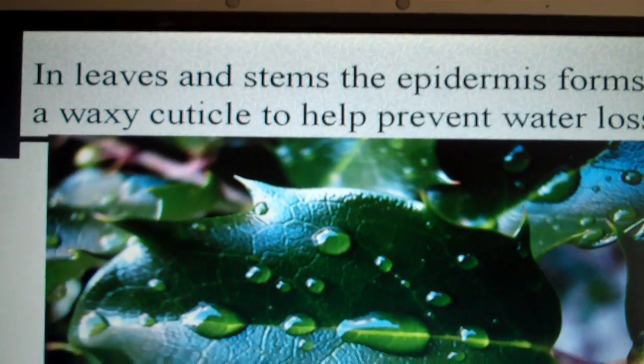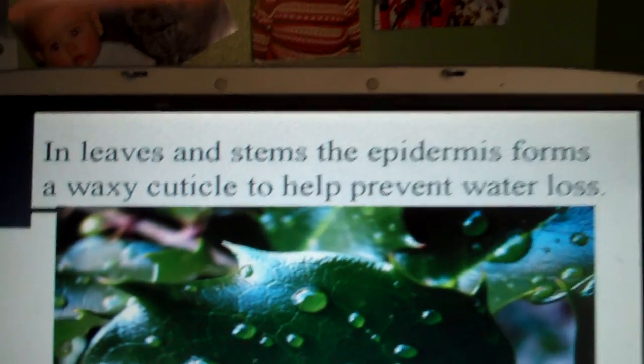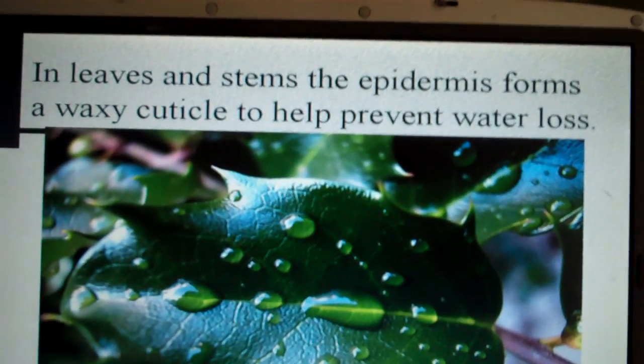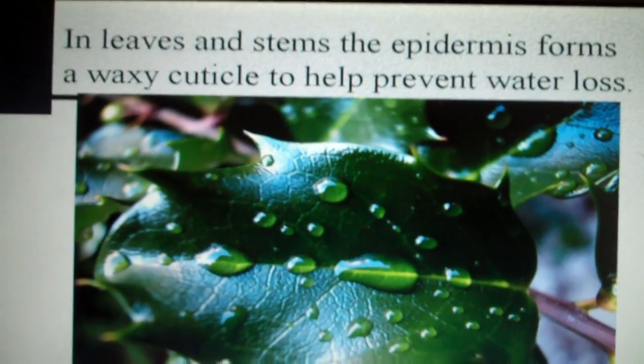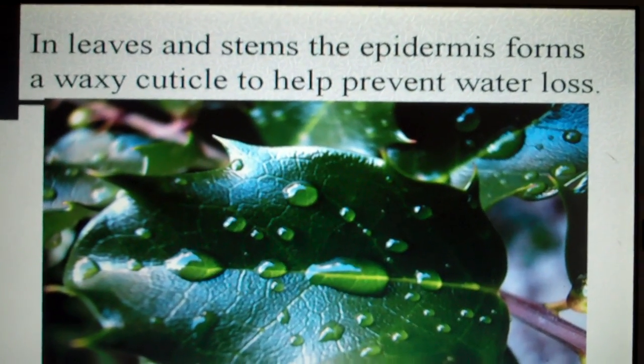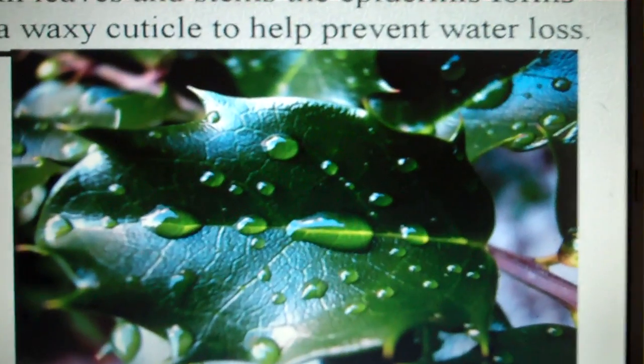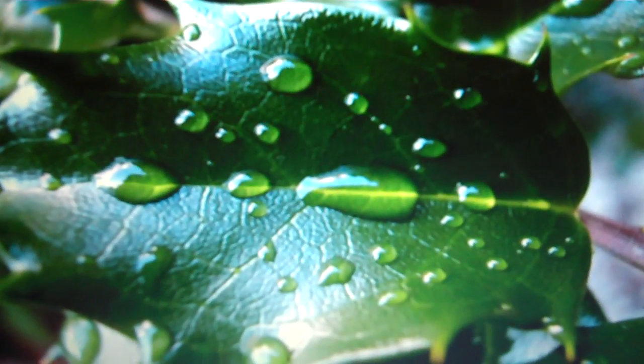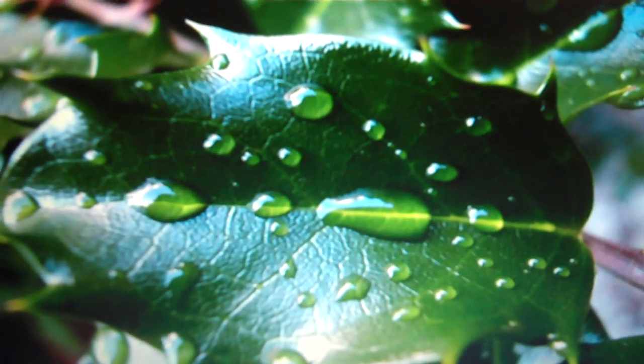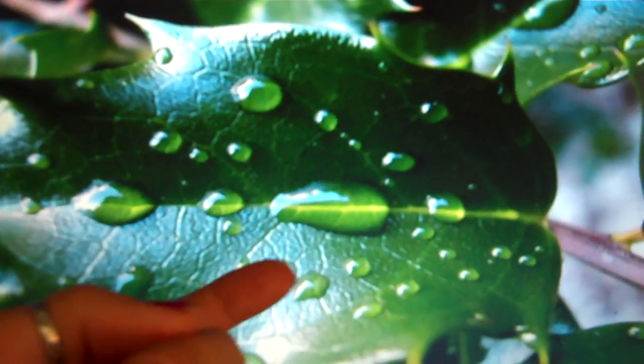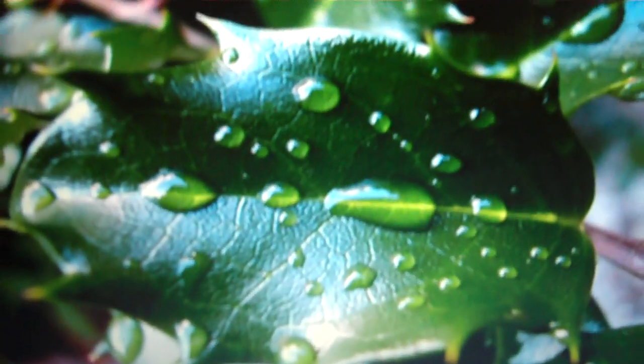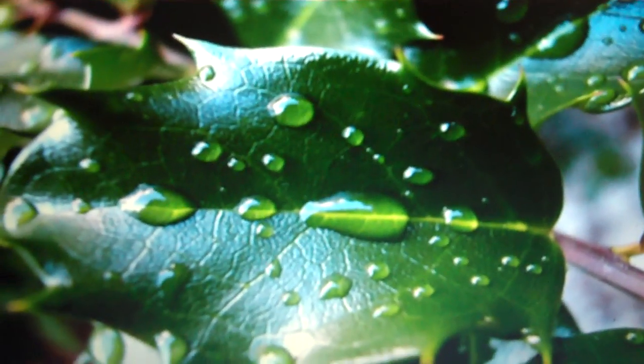We mentioned dermal tissue helps prevent water loss. In leaves and stems, the epidermis forms a waxy cuticle to help prevent water loss. If you remember from organic molecules, wax is a lipid and lipids are non-polar so they repel water. You can see on this leaf here, it has a waxy surface which is the cuticle, and not only does the water bead up that lands on the leaf, but it also helps prevent water from evaporating from the plant.